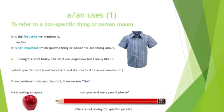The first use of 'a' and 'an' is to refer to a non-specific thing or person. 'I bought a shirt' — it is the first time we mention it, and perhaps it is not even important which specific thing we are talking about. For example, 'I bought a shirt today' — which specific shirt is not important and it is the first time we mention it. But if we continue to discuss the shirt, then we use 'the shirt' because now it is specific.